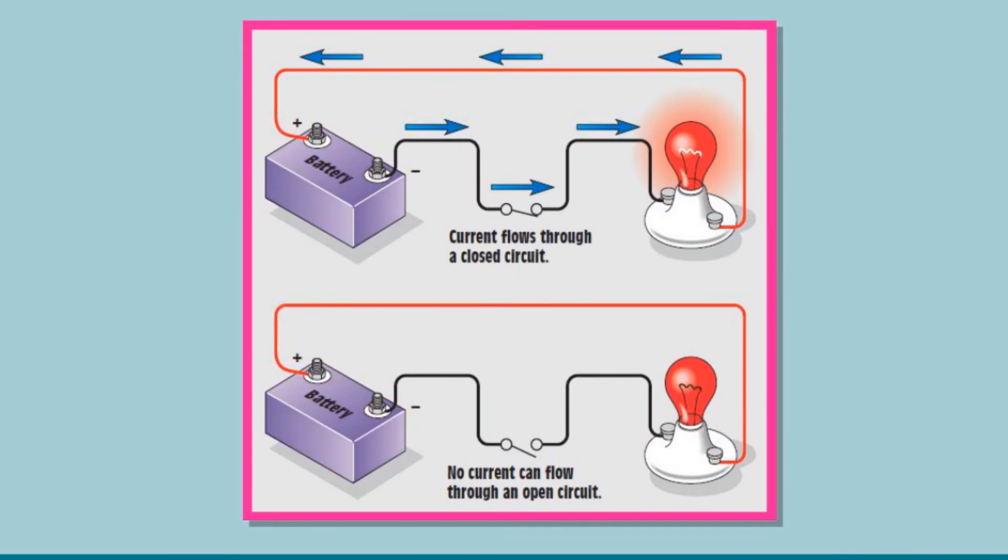For the current to flow, the device and the battery are joined through the wires to make a closed loop. When this circuit is complete, the current will flow and the device will work. This is called a closed circuit.